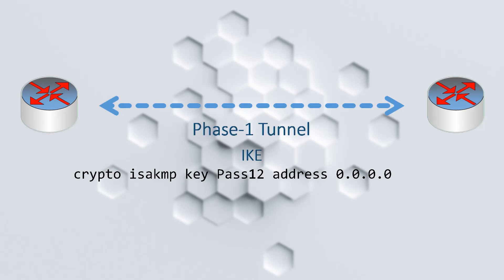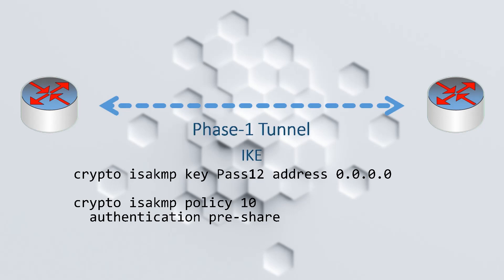You'll notice that we're using the ISAKMP keyword. This is one of the protocols that IKE uses, and Cisco have decided to use it in some of their commands. In addition to the key, we've also included an address. You can use this shared key with many different endpoints. This address can be used to limit which endpoints will be allowed to connect. If we use 0.0.0.0, like we have here, we accept connections from any IP address. We also need to create the ISAKMP policy, which will contain the rest of the settings we need for phase 1.